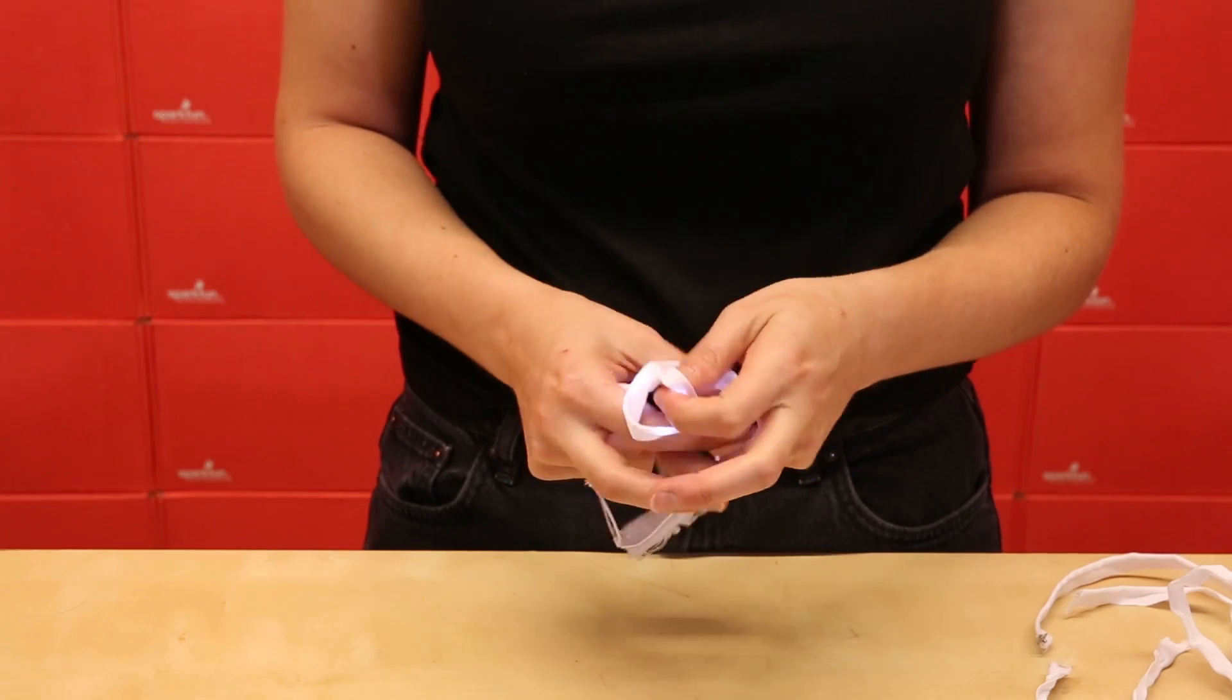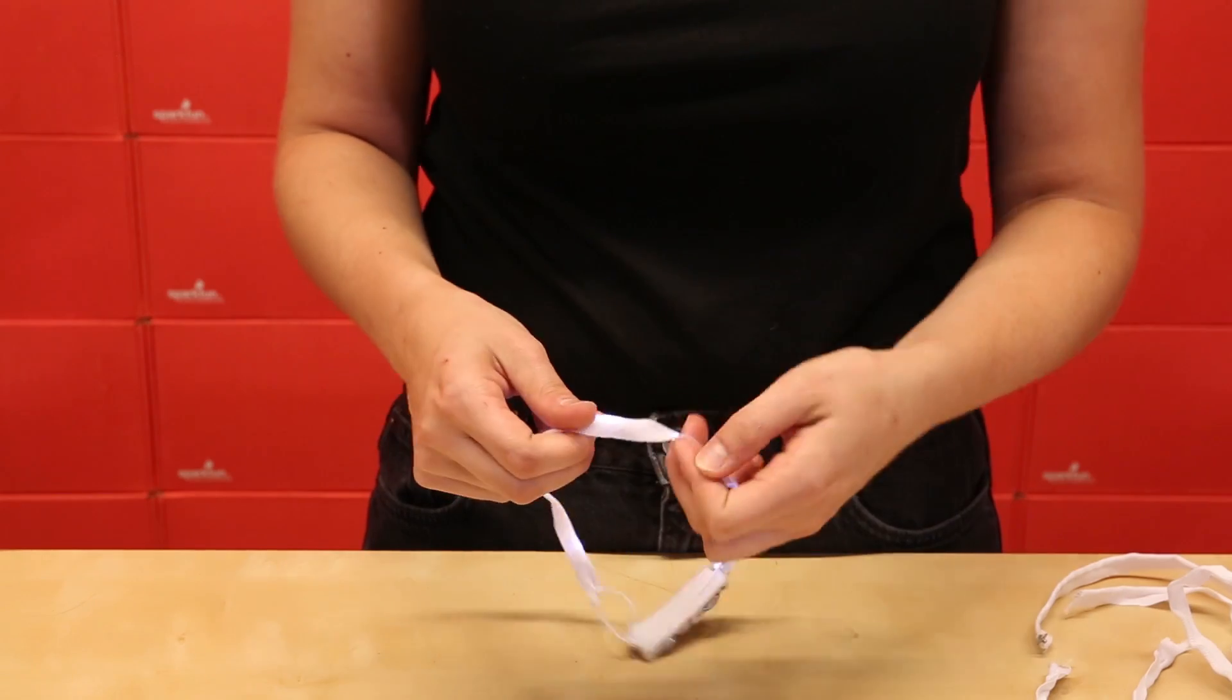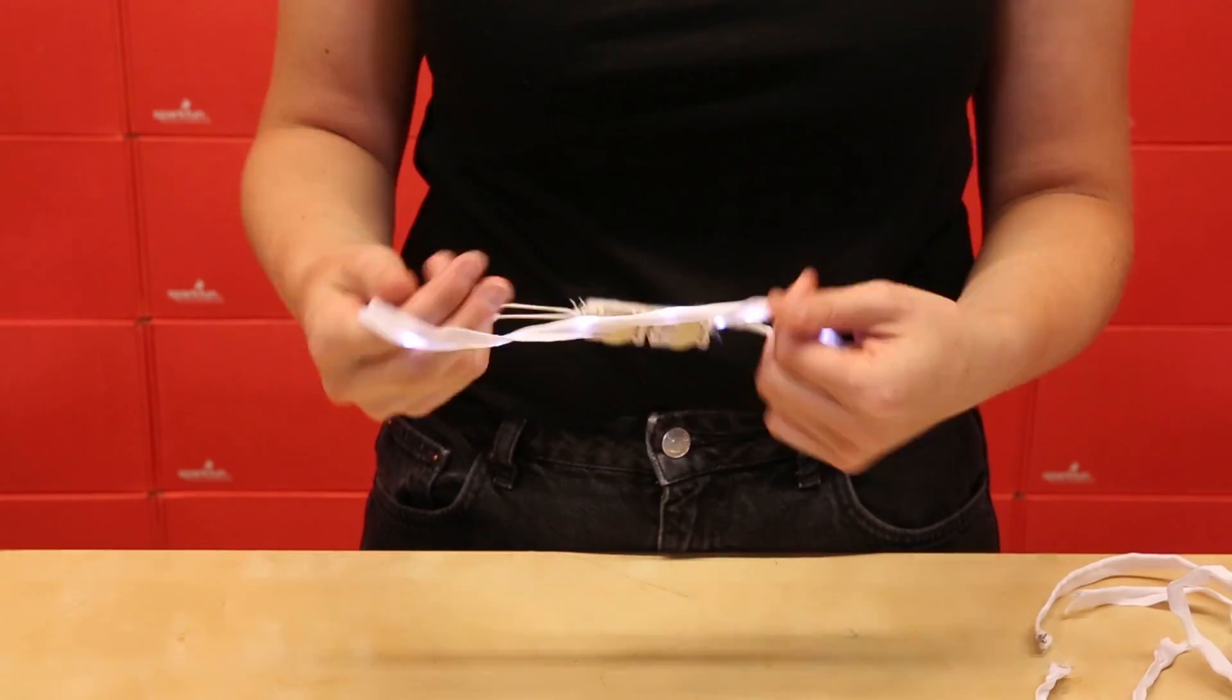These LED ribbons are highly flexible, foldable, and can even make knots. They are lightweight and can be twisted, bent, and sewn onto cloth or other materials.